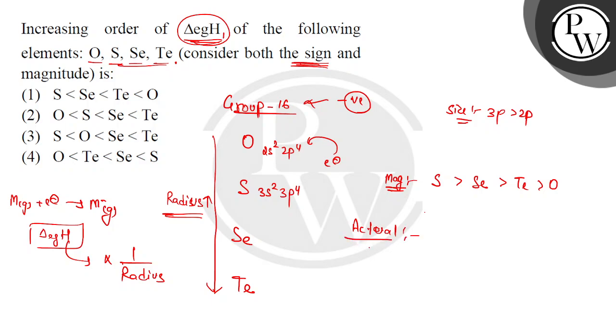So oxygen is more than sulfur, then selenium, then tellurium. The correct answer is option 1. I hope it will be clear, thank you.